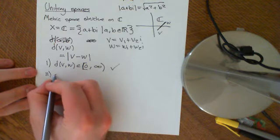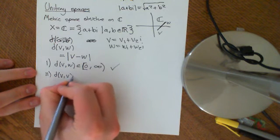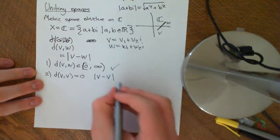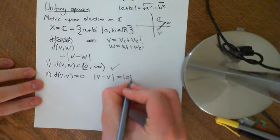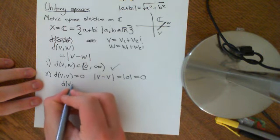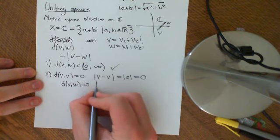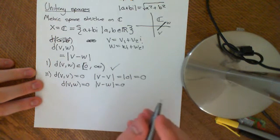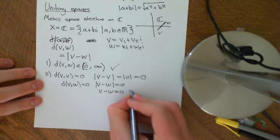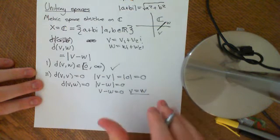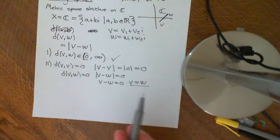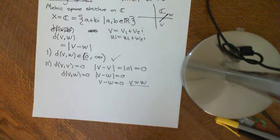The second property is that the distance between V and V should be equal to zero. If we take D(V, V), it's the modulus of V minus V. V minus V is the complex number zero, and the modulus of zero is zero. Conversely, if D(V, W) = 0, that implies the modulus of V minus W equals zero. There is only one complex number with modulus zero, and that is zero. So V minus W must equal zero, which implies V equals W.